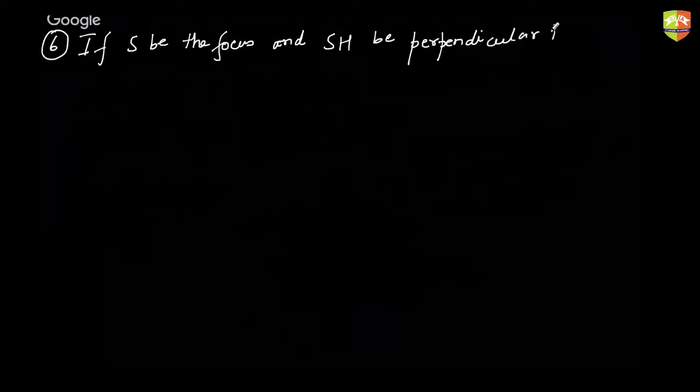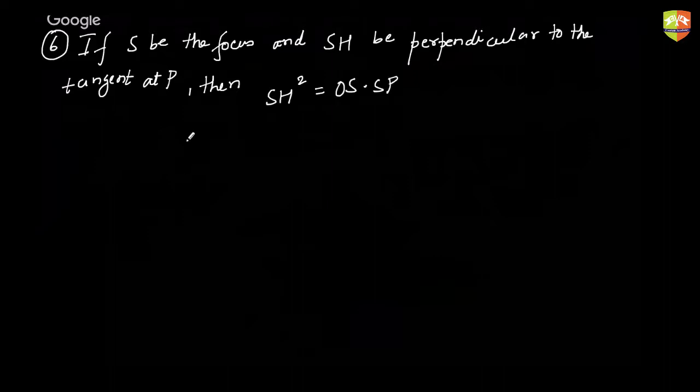Next is the sixth property. If S be the focus and SH be perpendicular to the tangent at P, then SH² = OS · SP. So let's say this is the tangent at point P, this is your S, and this is your O — you have to prove that SH² = OS · SP.